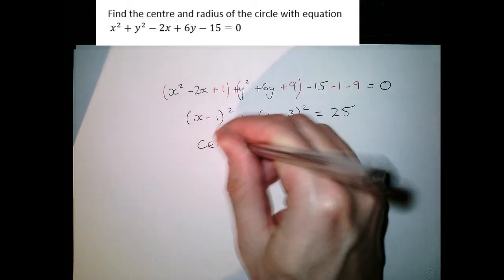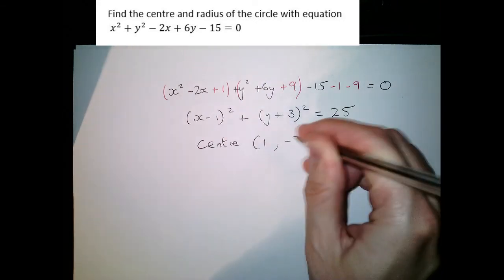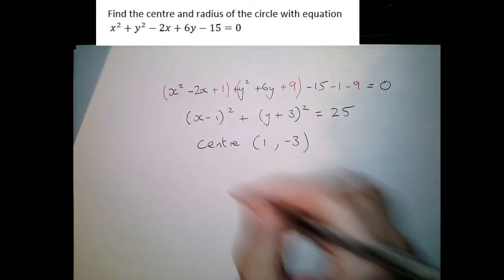So the centre of our circle is the point 1 minus 3 and the radius of the circle.